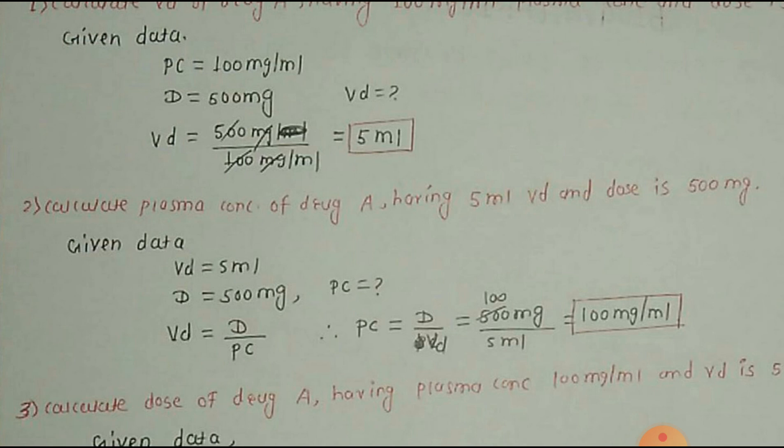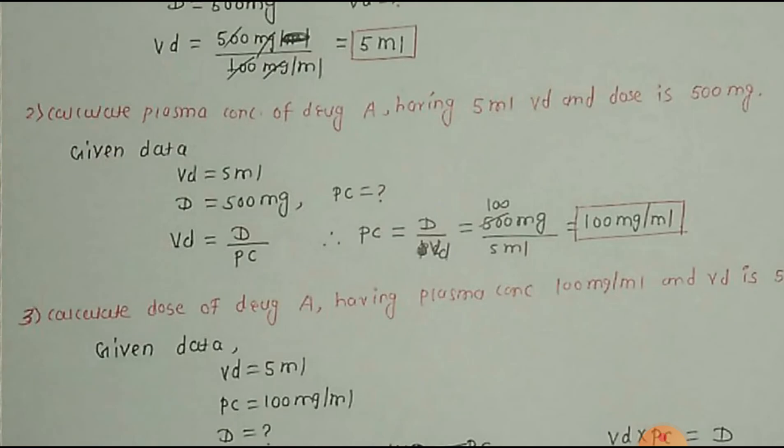Formula is Volume of Distribution is equal to dose upon plasma concentration. So, plasma concentration will be dose upon Volume of Distribution. So, 500mg divided by 5ml is equal to 100mg per ml.